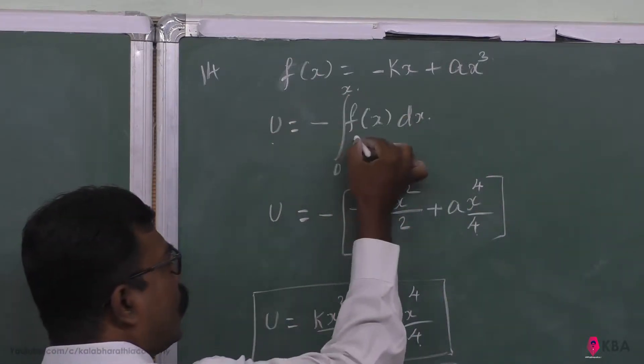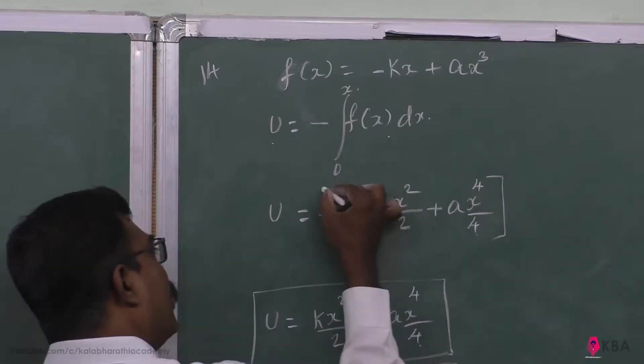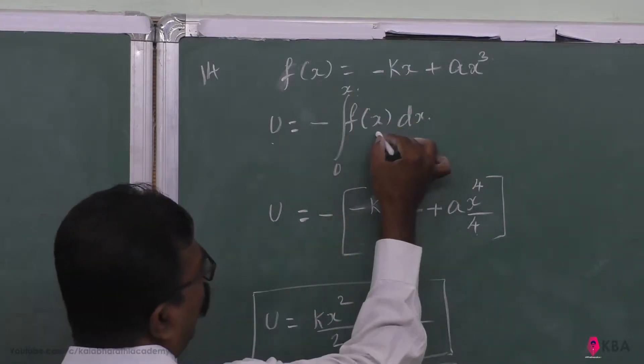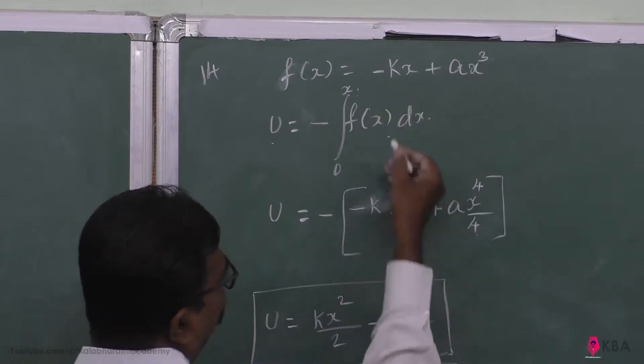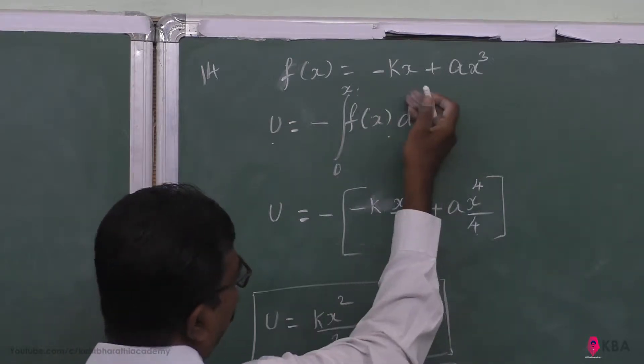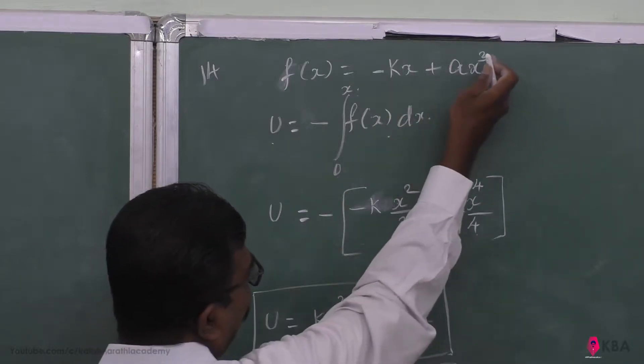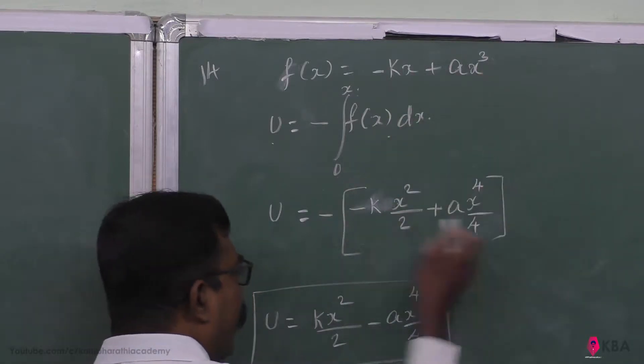It is minus integral of F(x)dx, integrated from 0 to x. Taking the value of F(x) and integrating, to simplify we can take minus k out to get x² by 2, plus a taken out gives x power 4 by 4, everything minus.